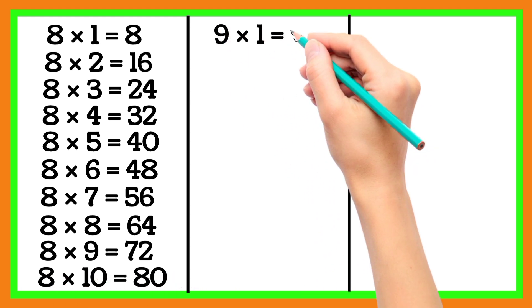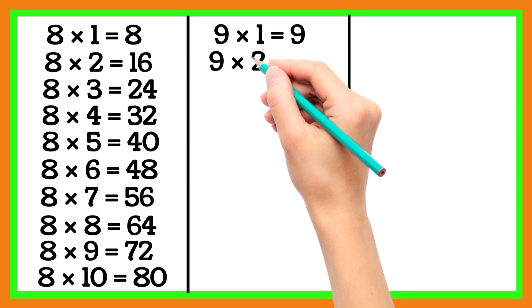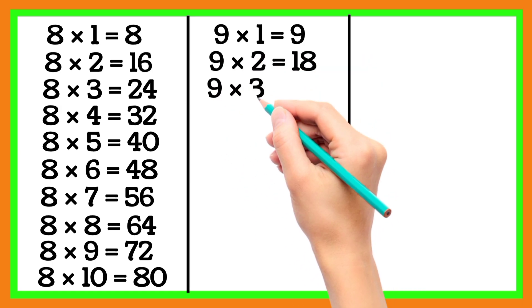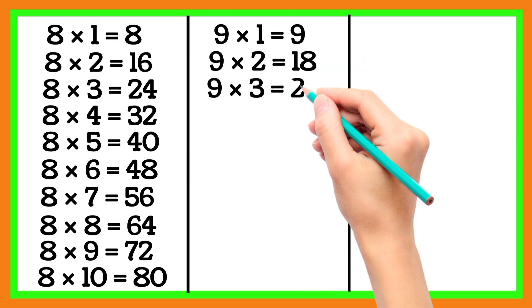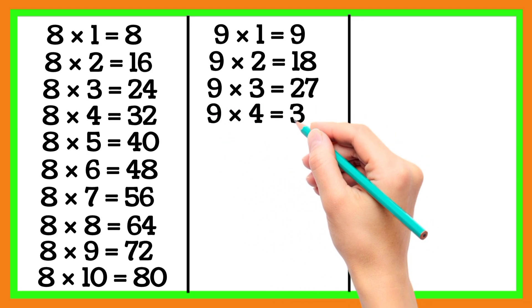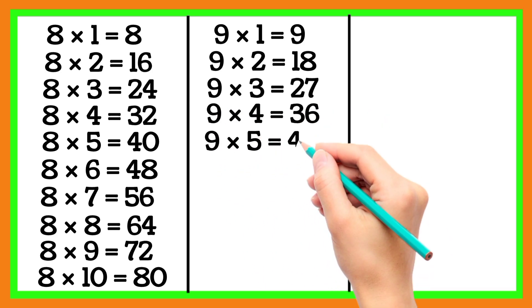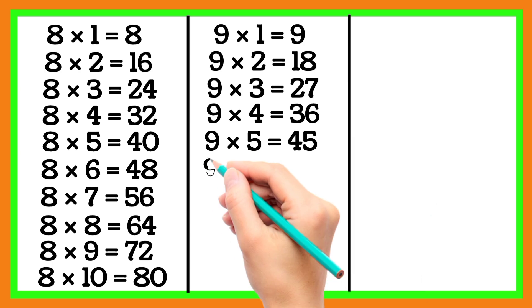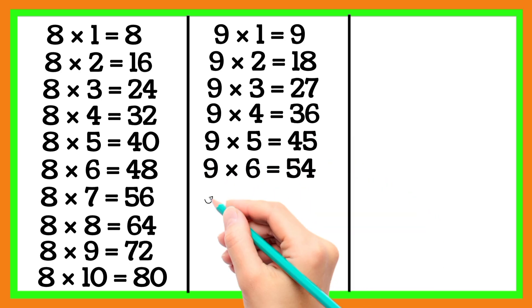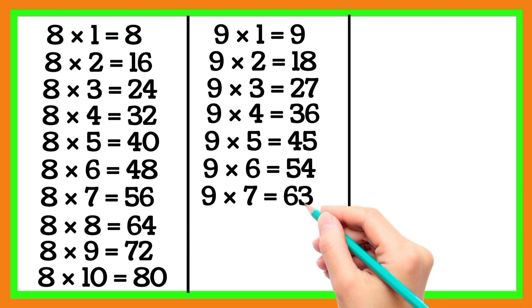9 1 is 9, 9 2 is 18, 9 3 is 27, 9 4 is 36, 9 5 is 45, 9 6 is 54.